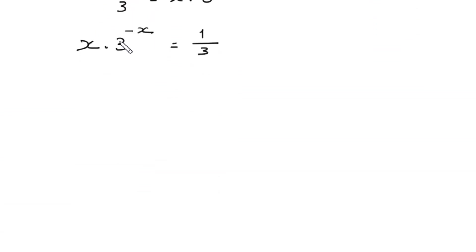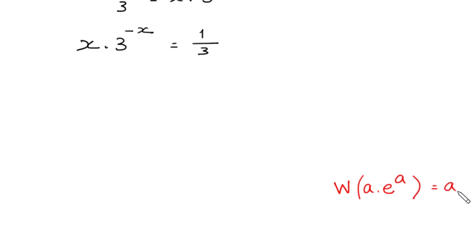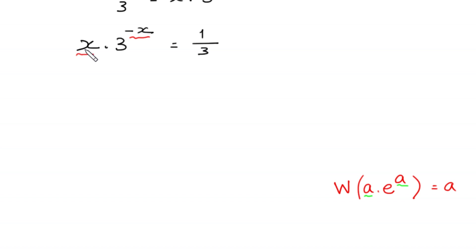Now we want to use the Lambert W function here. That is, W function of a times e to the power a is equal to a. To use the Lambert W function, we must have the same expression in both places. But for now, here we have negative x and here we have positive x.